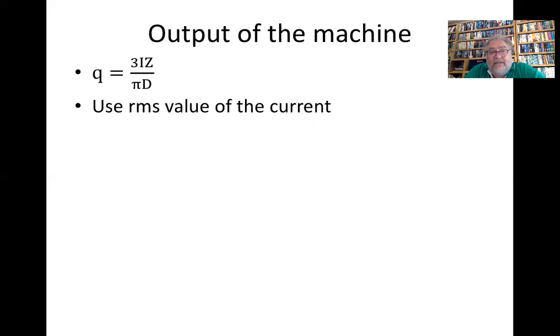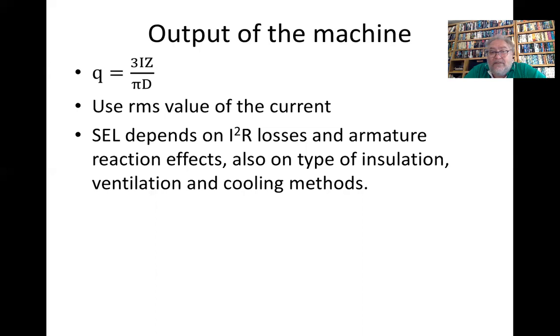So we still have Q = 3IZ over πD, and we use the RMS value of the current. The electric loading depends on I²R losses and armature reaction effects, also on the type of insulation, ventilation, and cooling method.